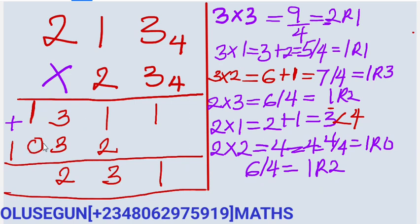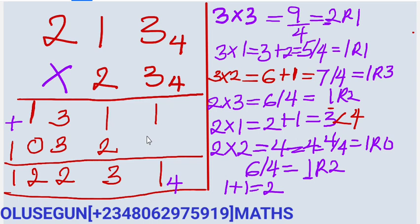1 plus 0 is 1. You add the carry 1, giving 1 plus 1 which equals 2. Write the 2. Then 0 plus 1 gives 1. So this is the final answer, and everything is now in base 4. This is how to apply the multiplication of number base — this is the basic step. If you follow all these steps, you are able to solve any question. Thanks for watching, and don't forget to subscribe and share this video for more ways of solving mathematics.